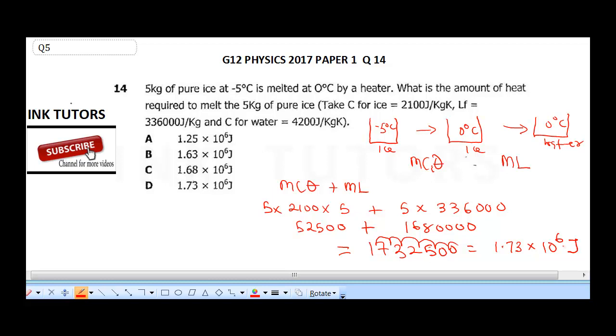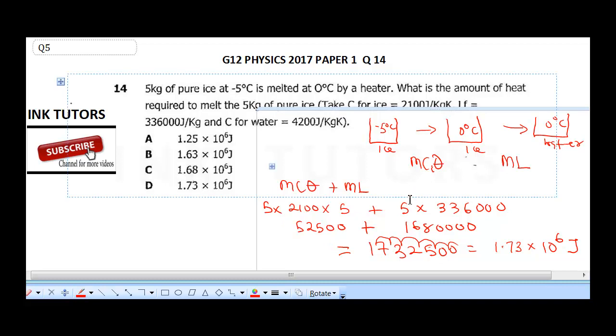So all you need to do is sum up the two heats, the heats from changing it from minus 5 degree Celsius to 0, and from 0 degree Celsius of ice to water. So when you sum it up and put in all your values, you'll get it.